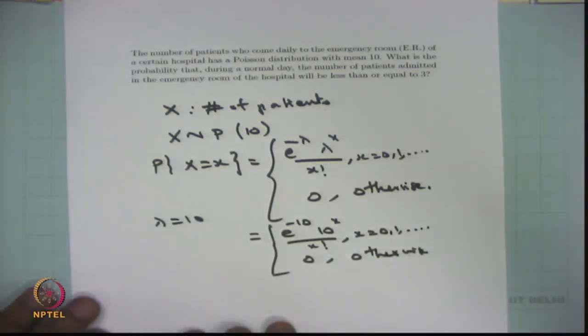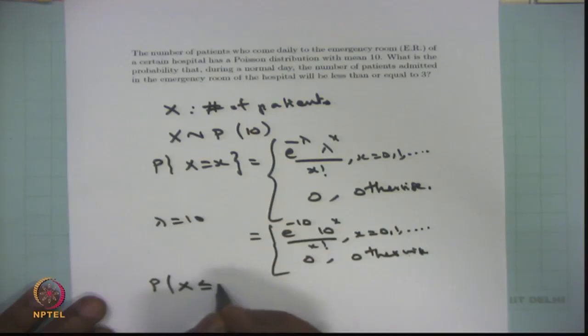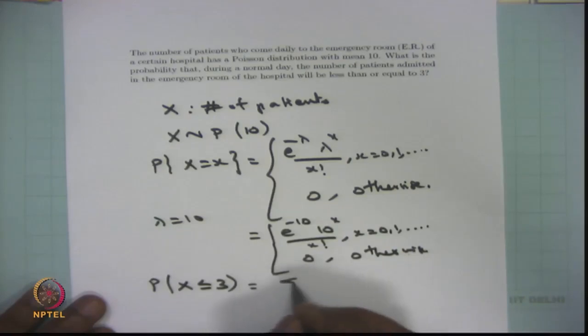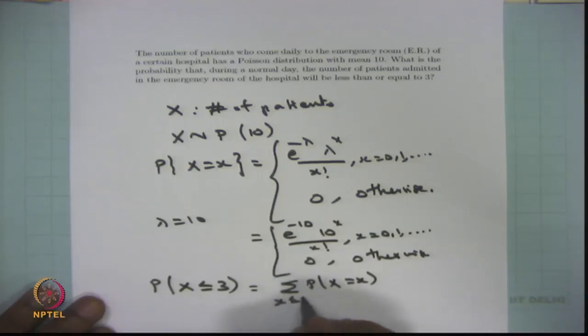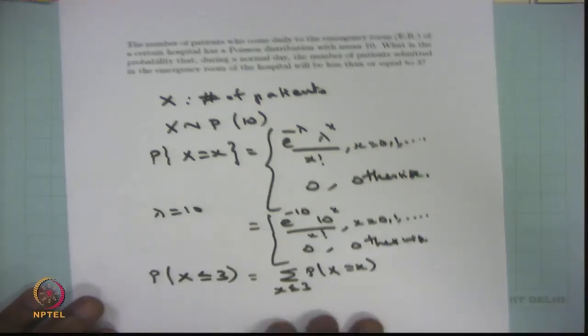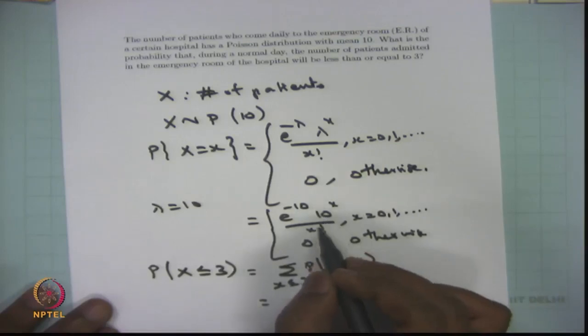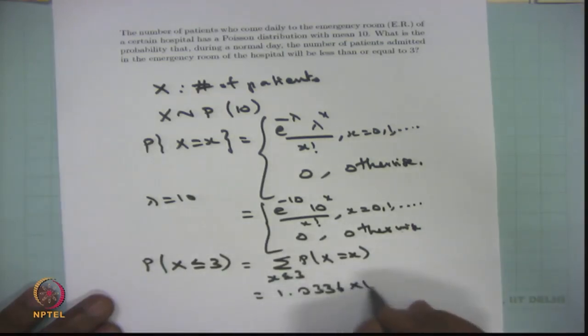The required probability is P(X ≤ 3), which equals the sum of P(X = 0) + P(X = 1) + P(X = 2) + P(X = 3). Substituting x = 0, 1, 2, 3 into the probability mass function and adding all values gives the answer: 1.0336 × 10^(−2).